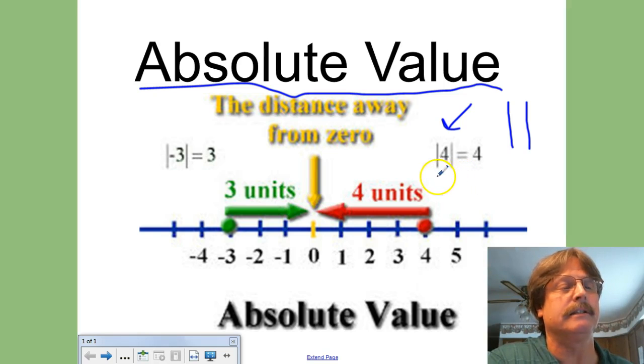If you look here in this example, we have the absolute value of 4 is 4, and over here in this example the absolute value of negative 3 is 3. So what does that mean to us? It means this right here, the distance away from 0.